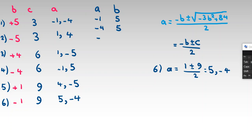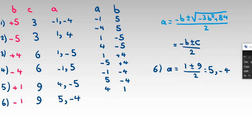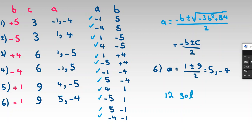Collecting all solutions for (a, b): (negative 1, 5), (negative 4, 5), (1, negative 5), (negative 5, 4), (1, 4), (negative 5, 1), (4, 1), (5, negative 1), (negative 4, negative 1), (4, negative 4), (5, negative 4), and (negative 1, negative 4). That gives 12 solutions total — or equivalently, 6 pairs times 2.